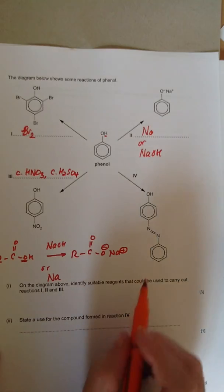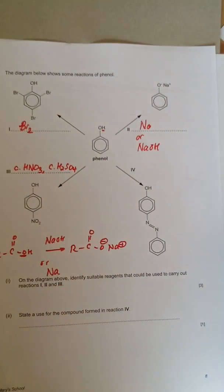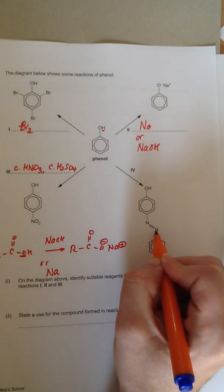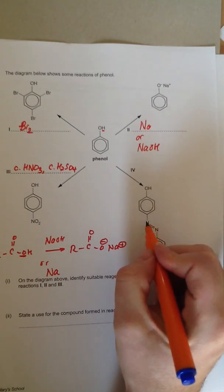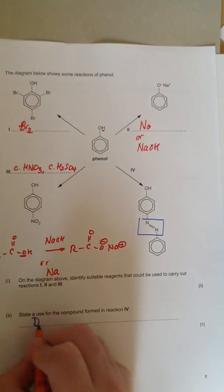State a use for the compound formed in reaction 4. That's an azo dye, and I know it's an azo dye because in the middle of the molecule, there's this motif, there's this functional group, single bond nitrogen, double bond nitrogen, and there are benzene rings on both sides. So it's used as a dye.